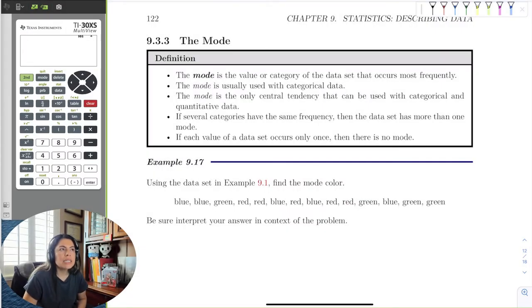The last piece is the mode. As I said, as promised, the mode is my favorite. The reason why the mode is my favorite is because it's the only central tendency that can be used for categorical data.